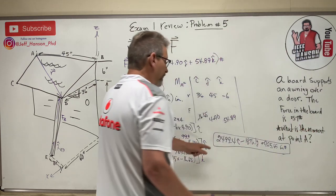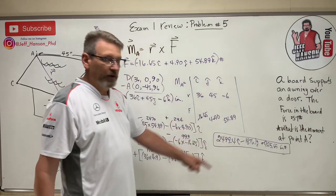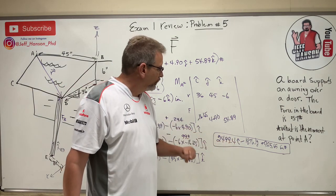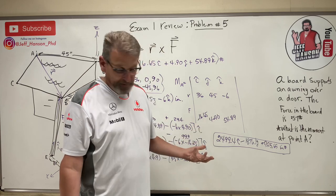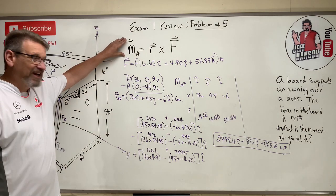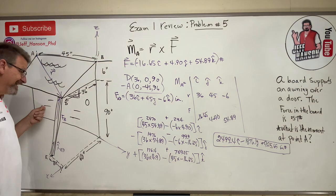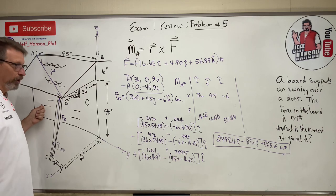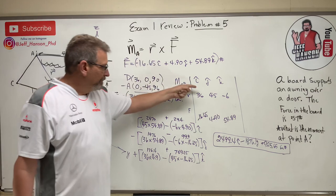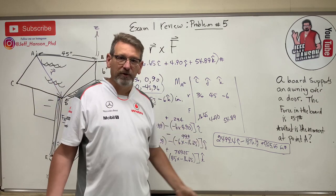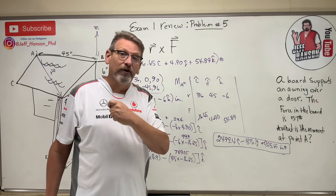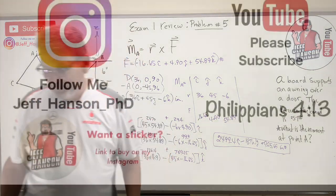Those may seem like big numbers, but they're in inches — divide by 12 to convert to foot-pounds for a more reasonable number; you get the exact same answer. To summarize: use r cross f for 3D moment problems. Identify r and F, put them in a matrix, and turn the crank — there's your answer. That's all of test one; now let's start studying for exam two!